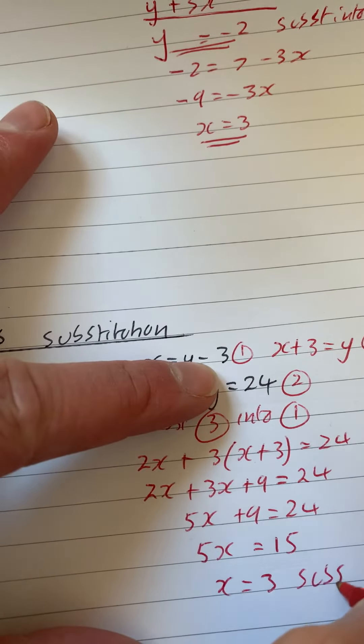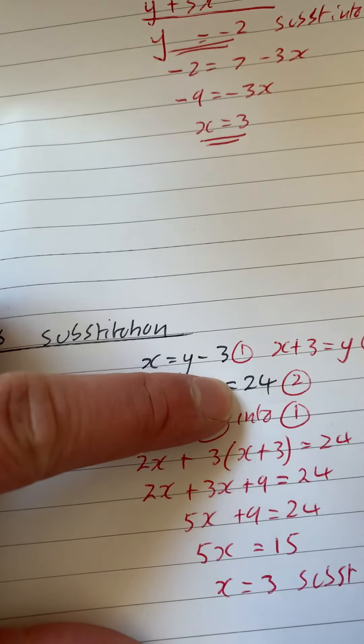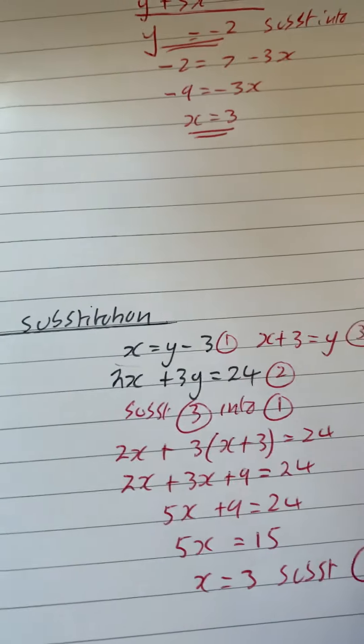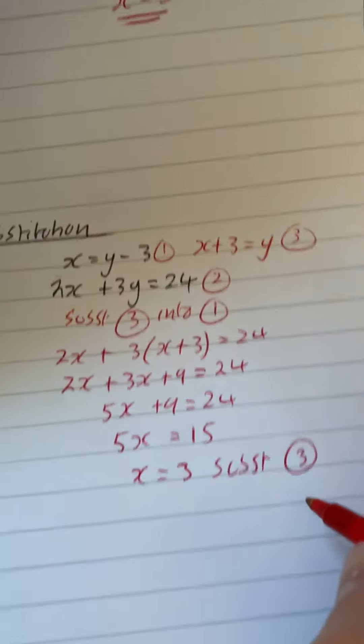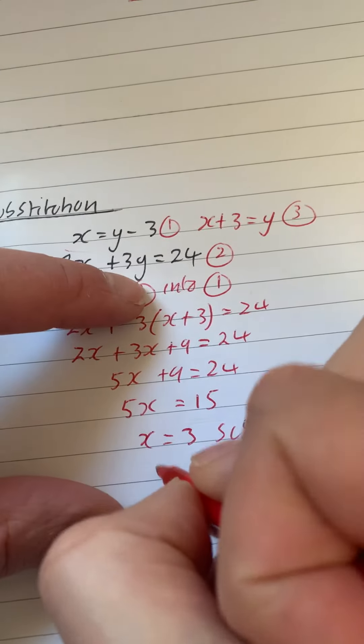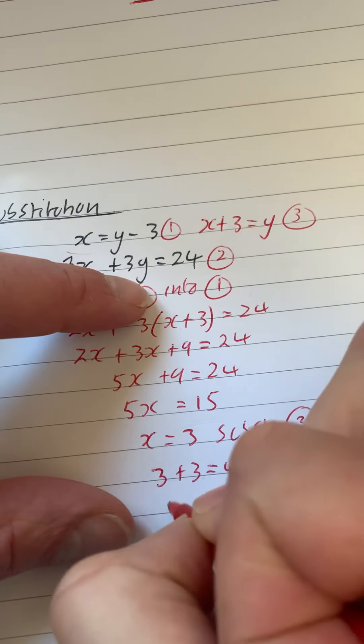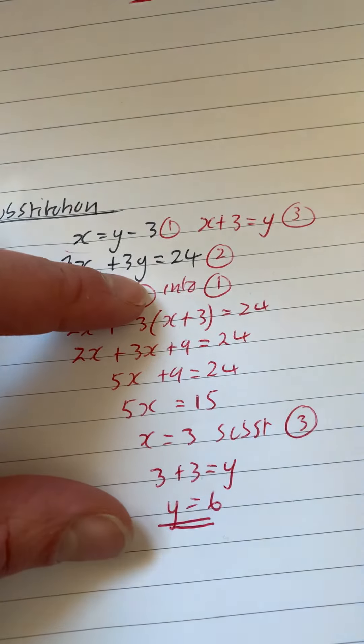Now we need to substitute this, and the easiest one to put it into is 3. So we'll substitute it into 3. So when x is 3, we've got 3 plus 3 is equal to y. So y is equal to 6.